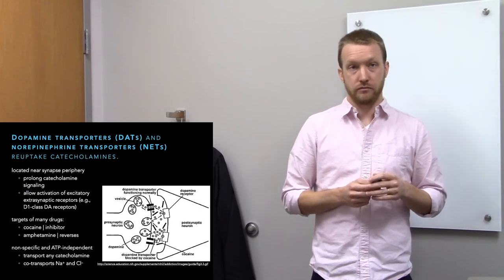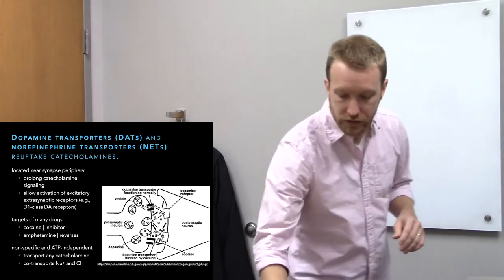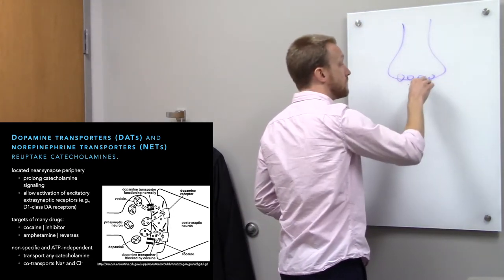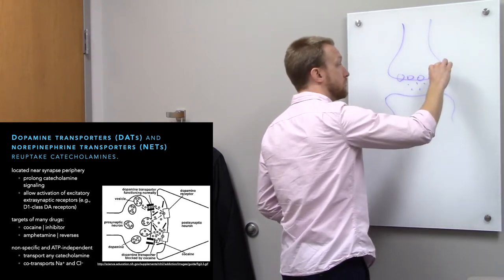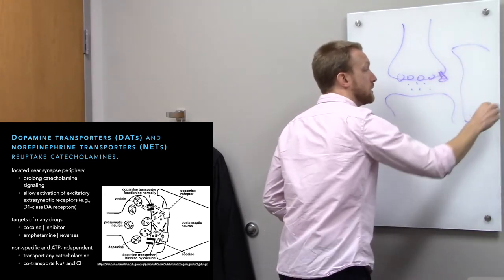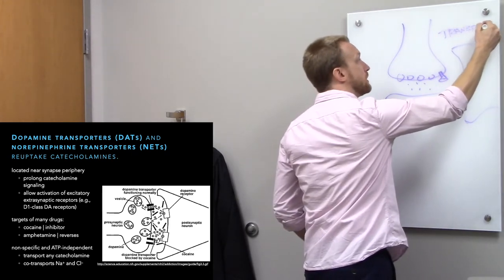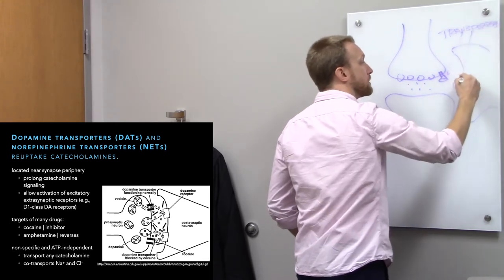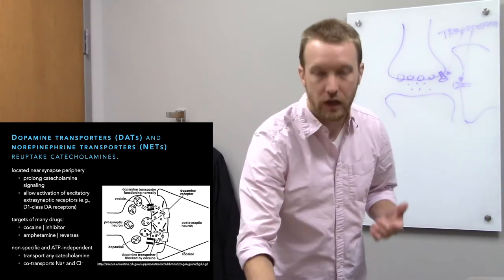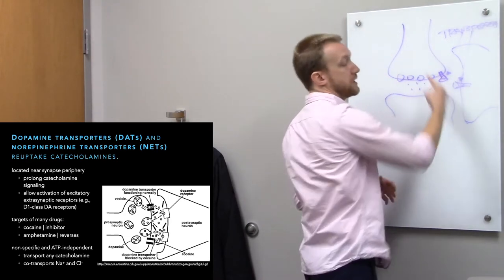One option would be transporters. Transporters are going to be located around the periphery of the synapse so that only as neurotransmitters try to move away are they going to get cleaned up. Some will be located on the presynaptic site and others will be located on glia. These transporters remove the neurotransmitter by riding along passive ion gradients — they transport other ions along to bias directional reuptake of the neurotransmitter.